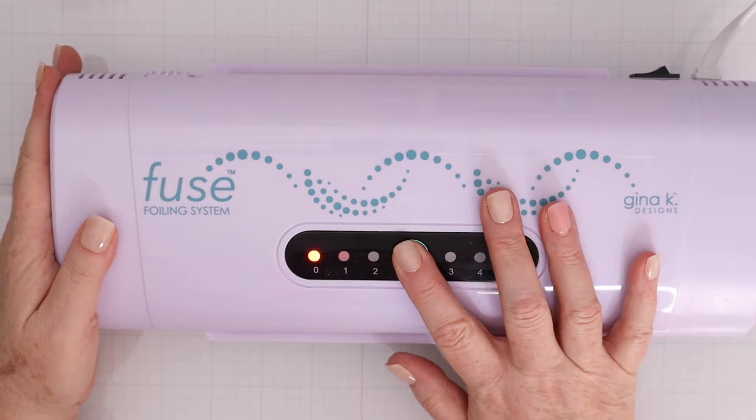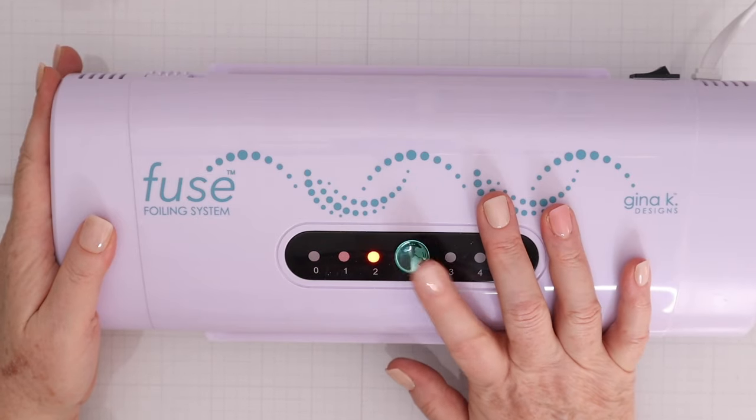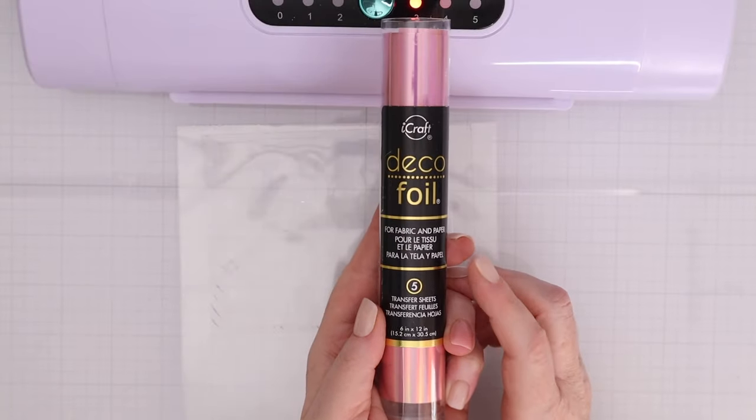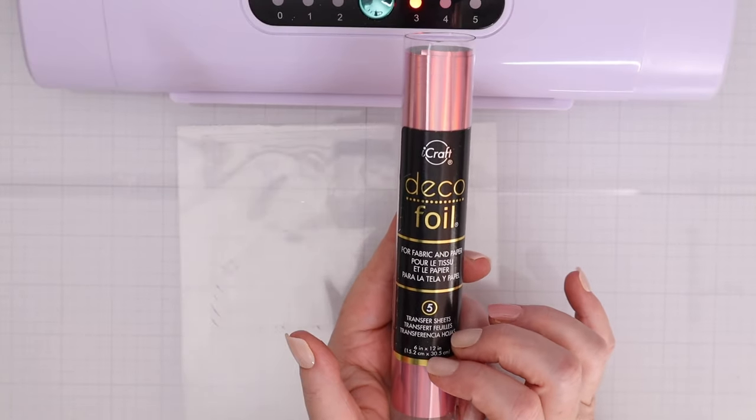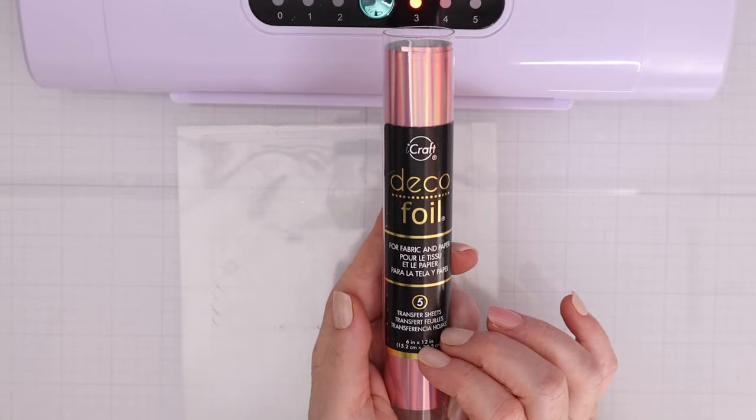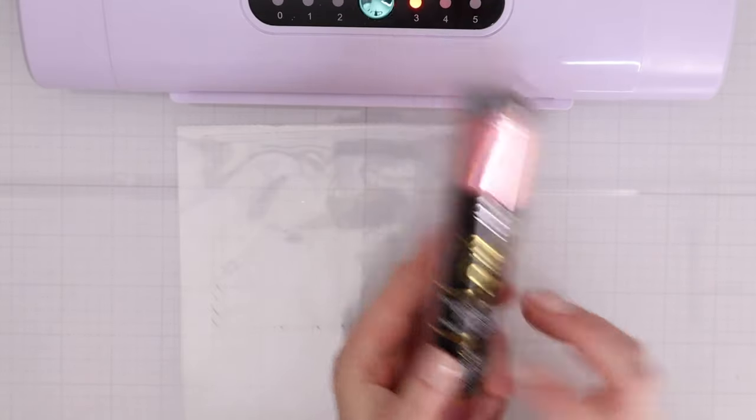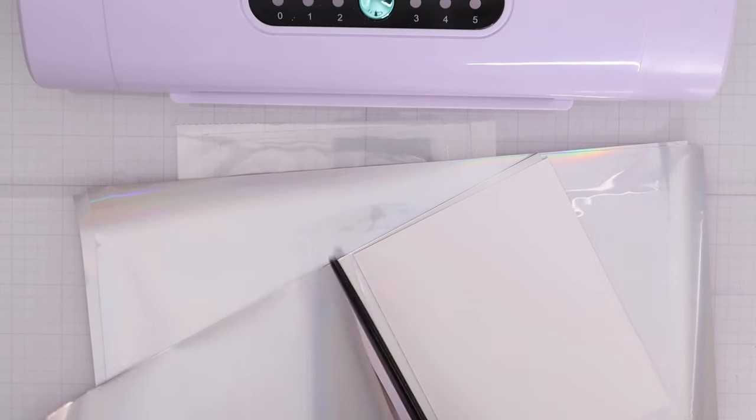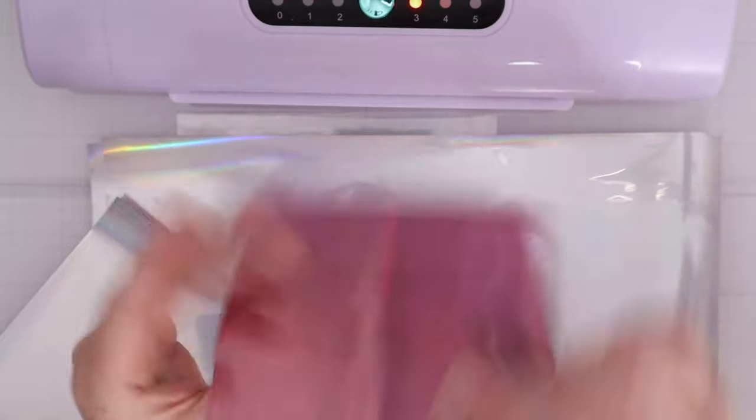Now you can use a regular laminator or you can use the Gina K Designs fuse foiling system with both of those. You will need foil sheets that apply to toner for both of them and the Thermoweb iCraft deco foil applies to both polyglaze and to toner prints like the card fronts.